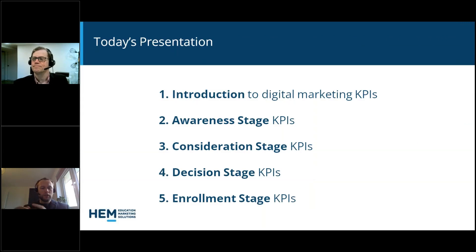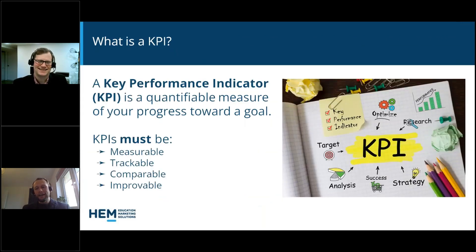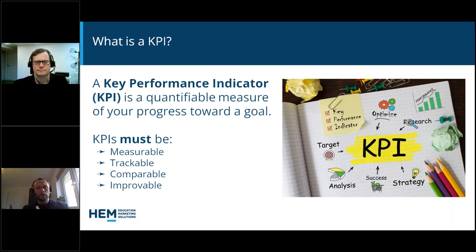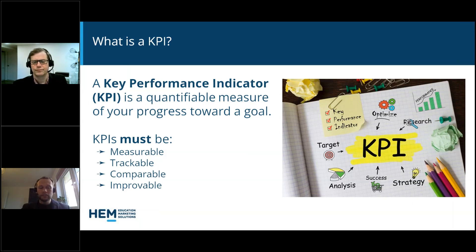You may be wondering, what is a KPI? A KPI — a key performance indicator — is a quantifiable measure of your progress towards a goal. For that to happen, it must be measurable and trackable, usually through some form of analytics, most commonly Google Analytics or the analytics available through certain platforms. It should be comparable, so you can gauge performance over time and perhaps even compare against competitors. And it should also be improvable — something you can see success in over time whilst working towards a goal.